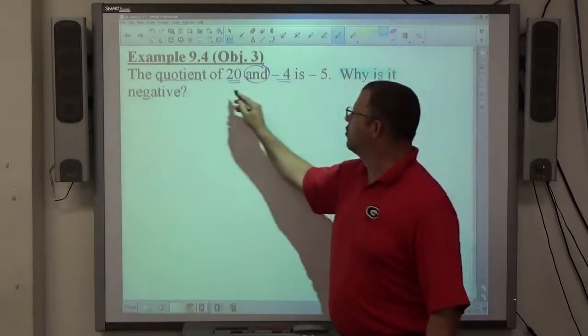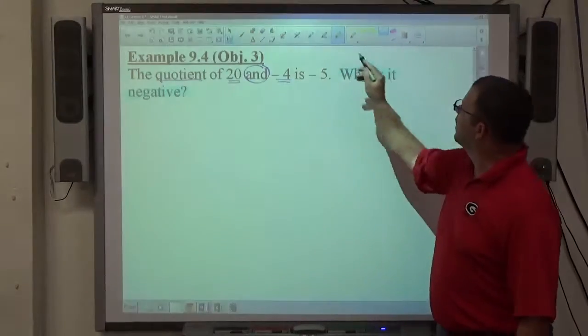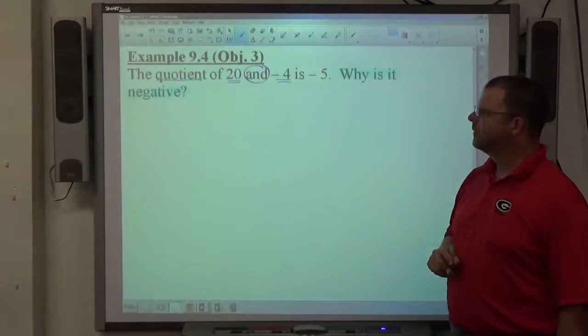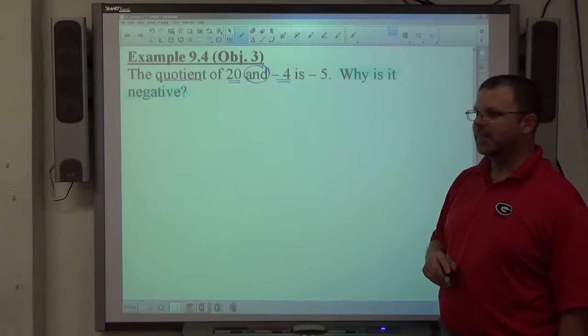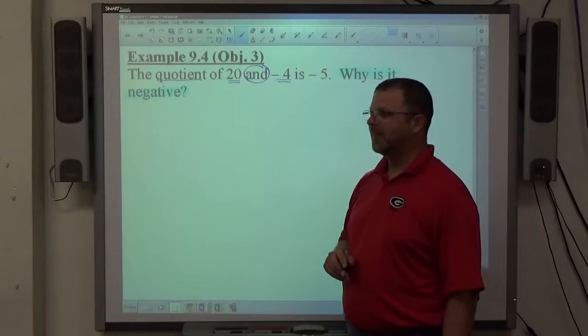The question is, why is the quotient negative? Right, or why is it negative? Because it's divided by negative, and 20 is not negative.